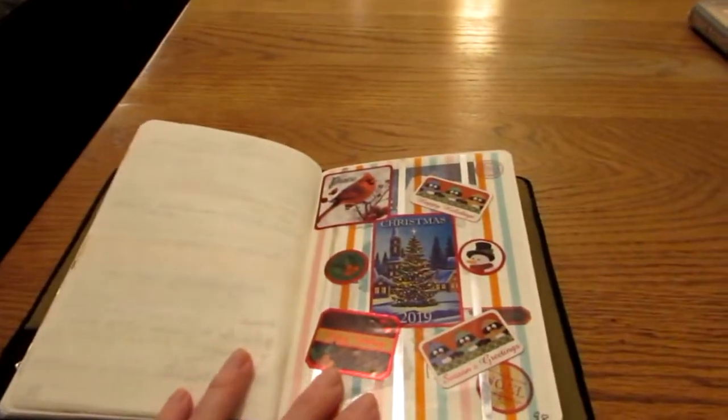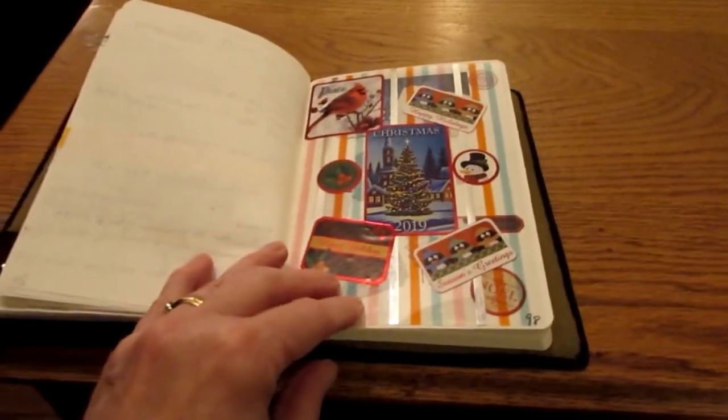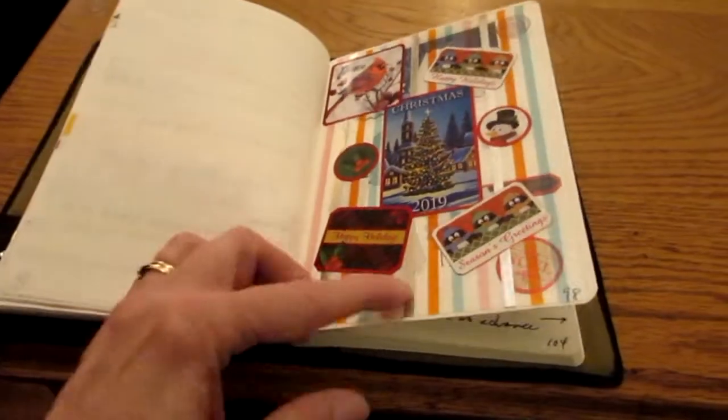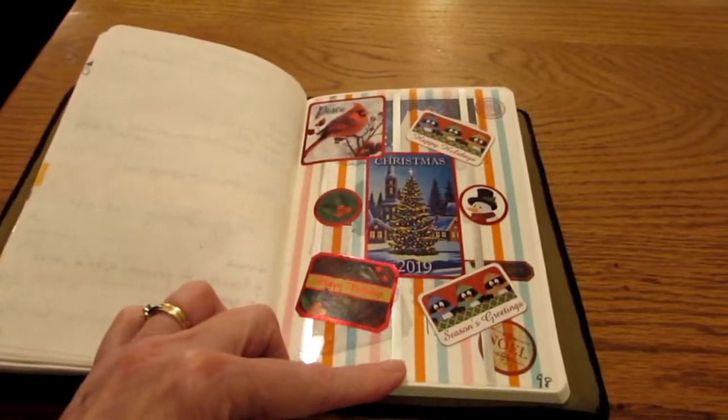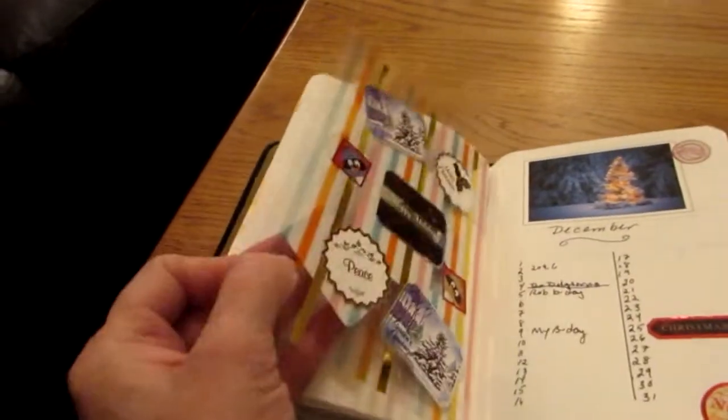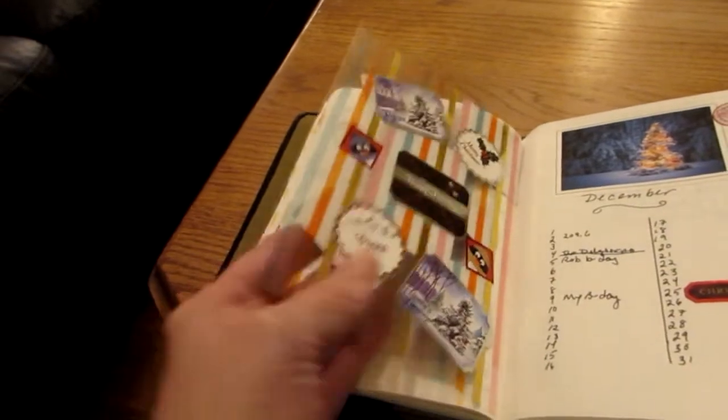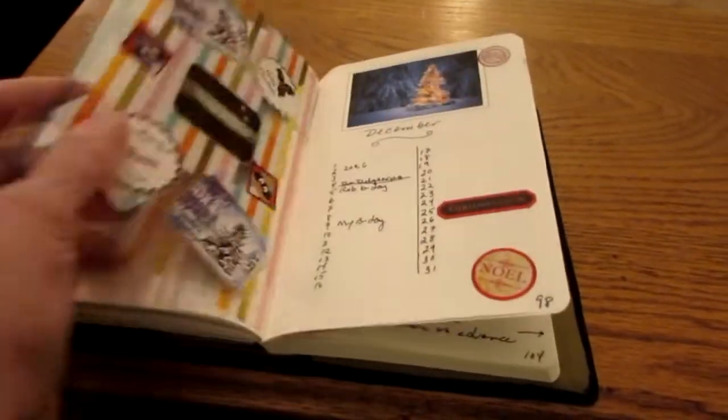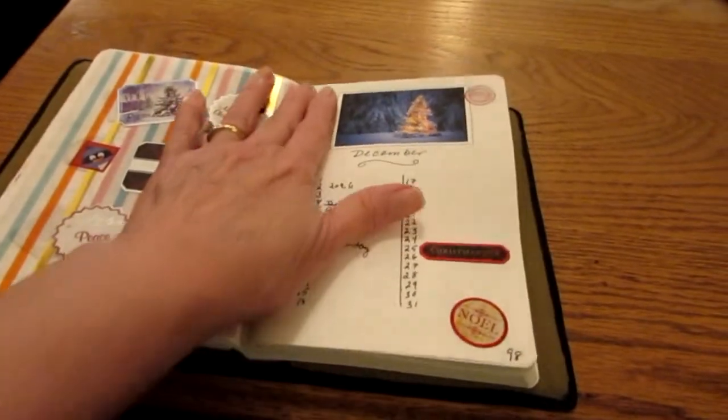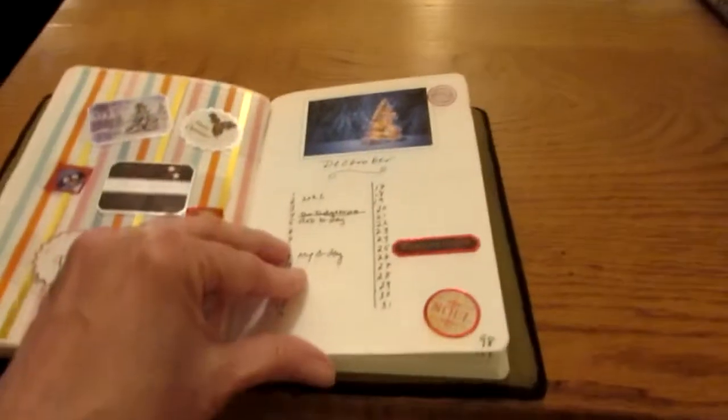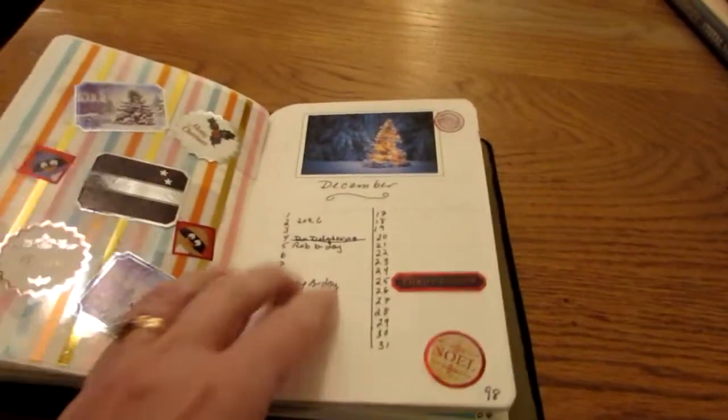So here is the beginning of December. Oh look at that, my battery is already dying. How awesome is that? So this is the beginning of December and I did decorate this up quite a bit. It's a clear piece of plastic that came in a planner box from long, long ago. And I attached stickers on both sides.